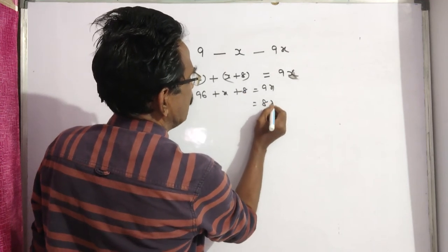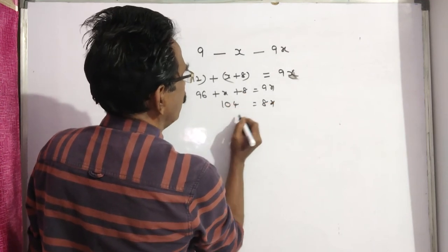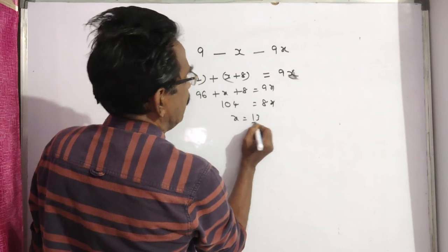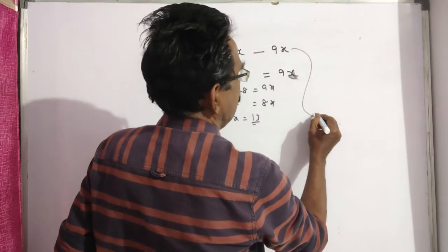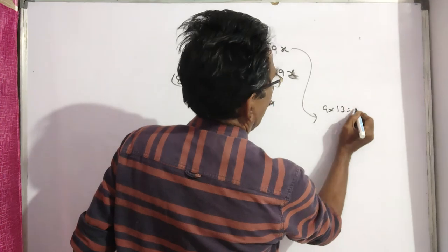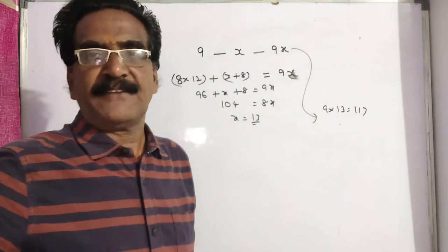8x is equal to 104, x is equal to 13. Now, the total expenditure is 9x, 9 into 13, 117 is your answer friends.